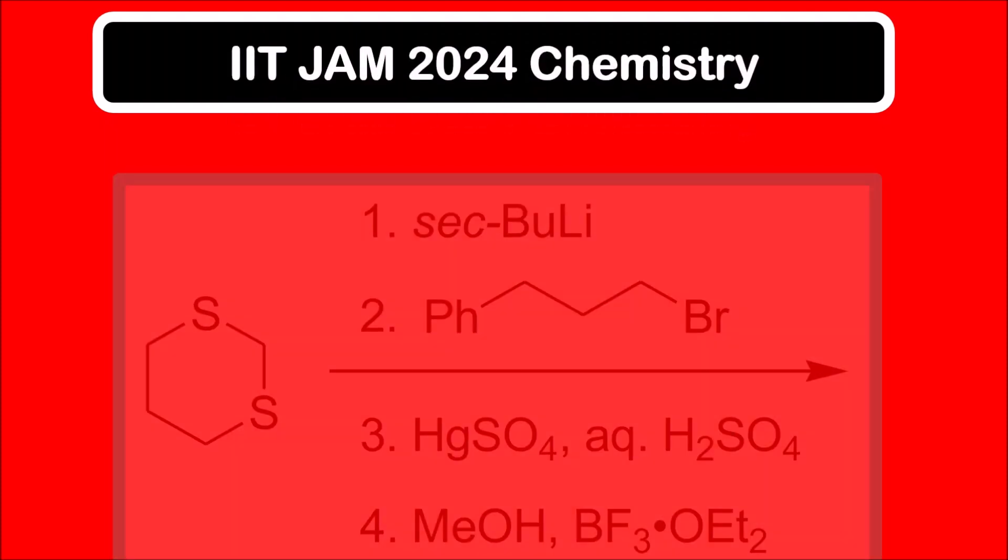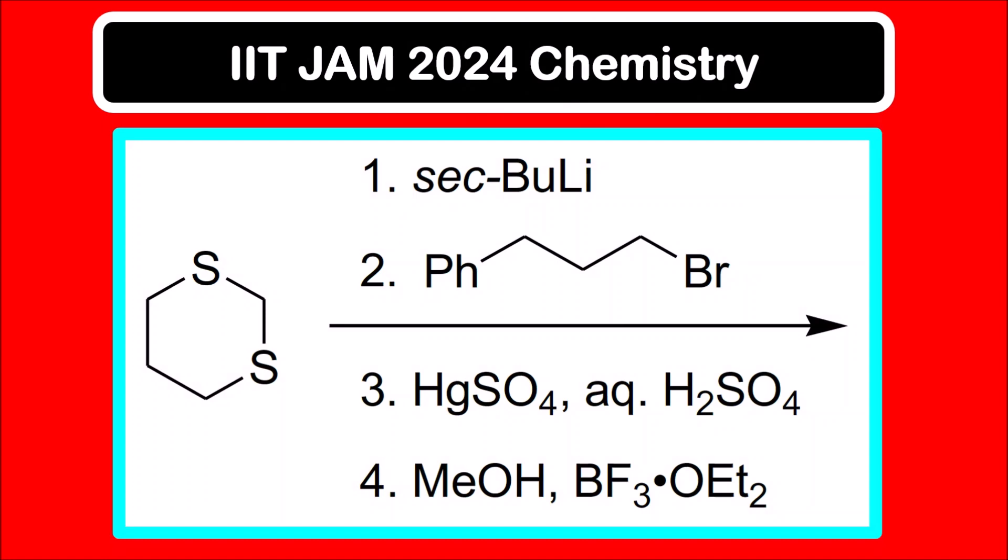Hello everyone! Welcome to Chemezon Complete Chemistry. This is another question from JAM 2024 chemistry paper. A reactant is given and four different reagents are given and we have to identify the product. We have to predict the final product.